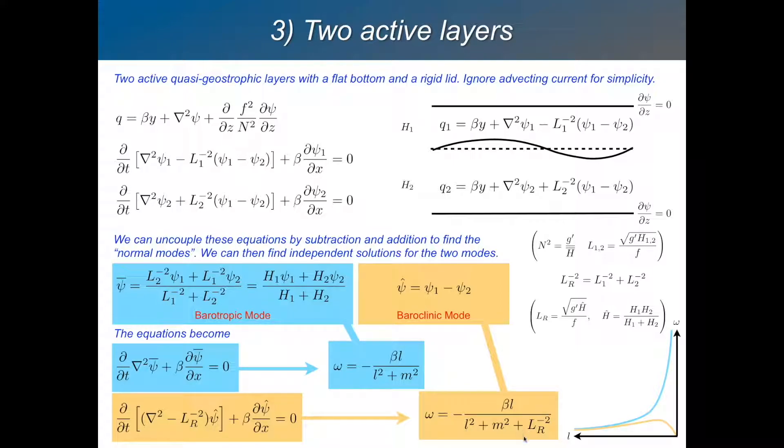And the baroclinic mode, with this Rossby radius term in the denominator, will always give you some almost non-dispersive Rossby waves for the long Rossby waves there.